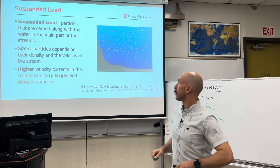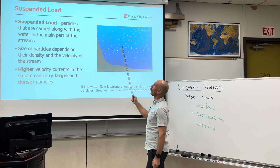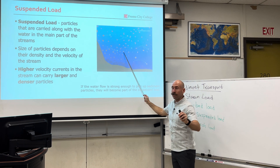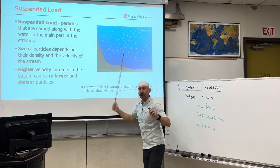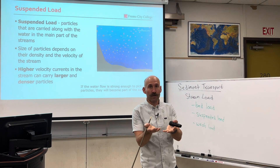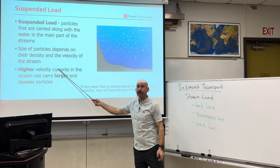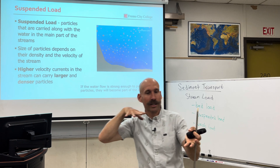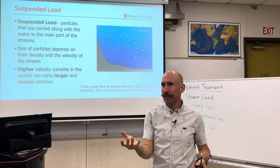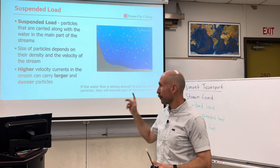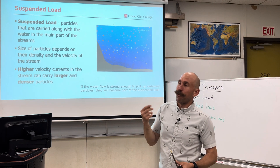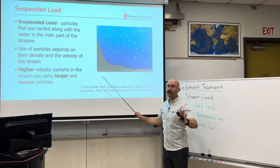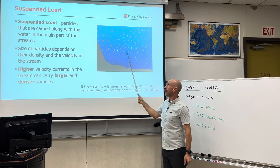Let's start with suspended load. These are particles that are carried along with the water in suspension — they are floating in the water column. You need a certain amount of velocity to pick sediments up off the bottom of the stream and transport them. Usually higher velocity means you can carry bigger particles. When it rains and river level rises and velocity increases, rivers often look brown and dirty — that's turbidity, the opaqueness of the water. Turbidity increases because you have a higher range of suspended sediments, which is wildly important for understanding fluvial systems.